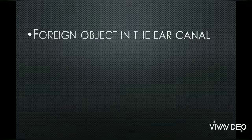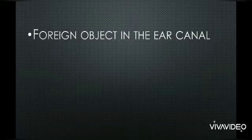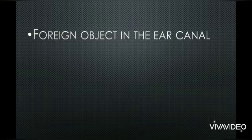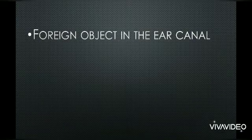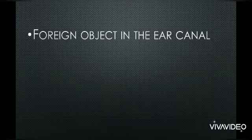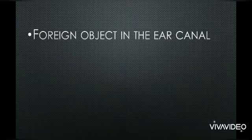The next cause is a foreign object in the ear canal. For example, if a child is playing with tiny balls or something similar and pushes that ball into the ear, it can cause conductive hearing loss because it blocks the transmission of sound from the outer ear through to the middle ear, inner ear, and auditory nerve. By removing that object, hearing will return to normal.